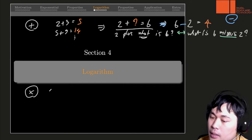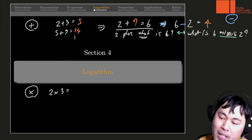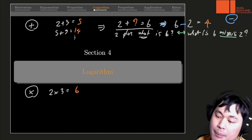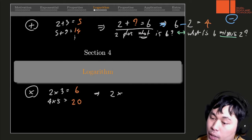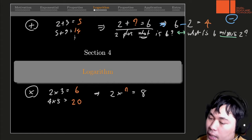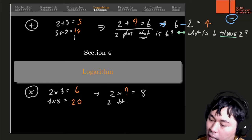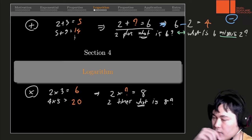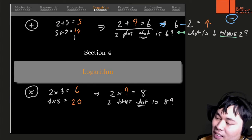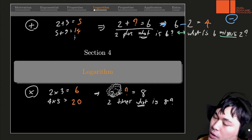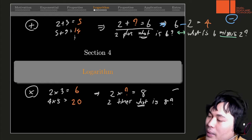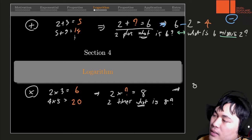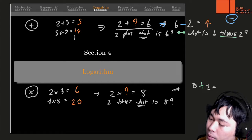Likewise for multiplication you can ask the forward question where you have two numbers and you multiply them together. So 2 times 3 is 6, 4 times 5 is 20 and so forth. But likewise if you ask 2 times what gives you 8 — again 2 times what is 8 — this is a natural problem: you have a box with two items, you want 8 items, how many boxes do you have to buy? In this case we have to invent division. So 8 divided by 2 gives you the answer, which is 4.